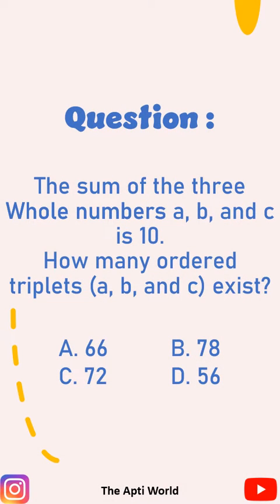Question of the day. The sum of three whole numbers A, B and C is 10. How many ordered triplets A, B, C exist?